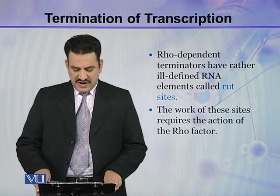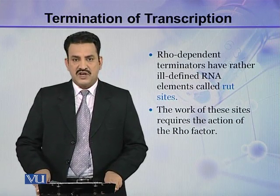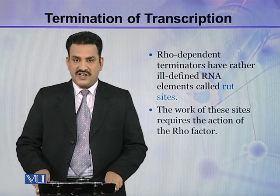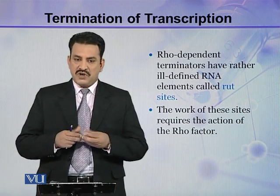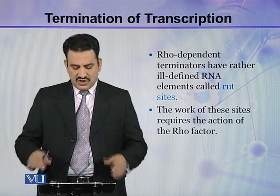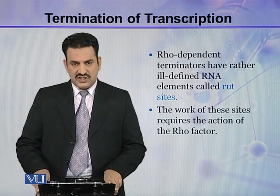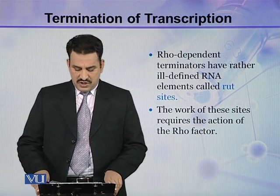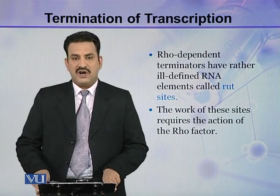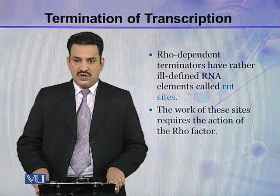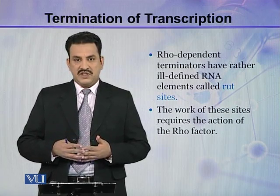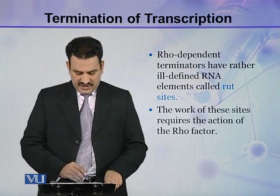RHO dependent terminators have rather ill-defined RNA elements, and these ill-defined RNA elements are called rut sites. There are some ill-defined sites on the RNA called rut sites, and the function of these sites requires the action of the RHO factor.